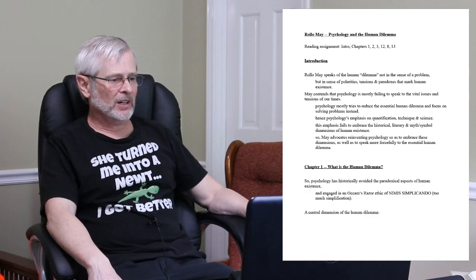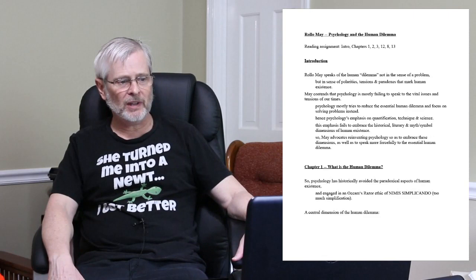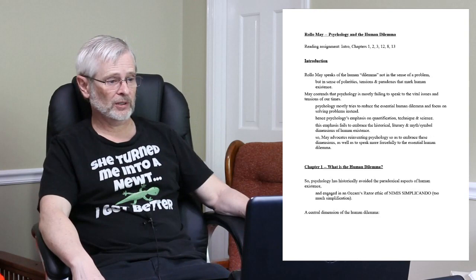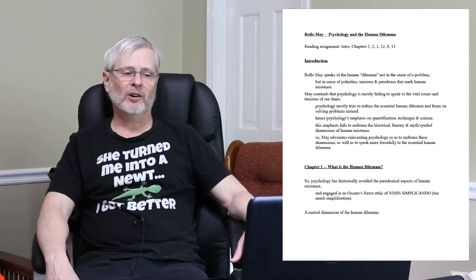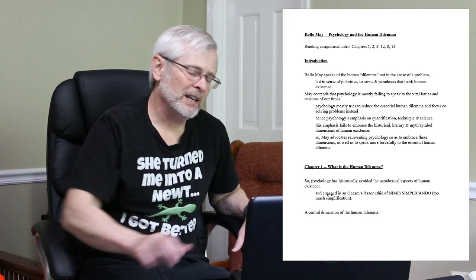Welcome back to Humanistic Psychology here at the University of West Georgia. This video will be the first one in the series where we'll be looking at Rollo May's book, Psychology and the Human Dilemma. Because students are always eager for their next reading assignment, I have one for you: the introduction, chapters 1, 2, and 3, which are relatively quick, and then chapters 12, 8, and 13, which are relatively slow. The game plan for this video is to get through the intro and the first two chapters.